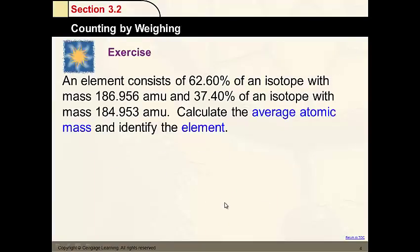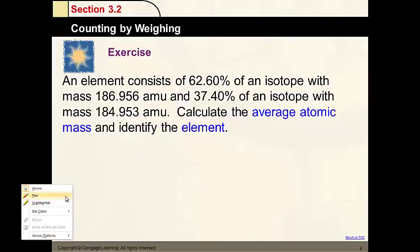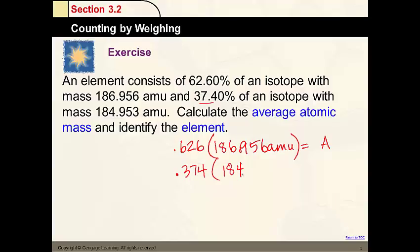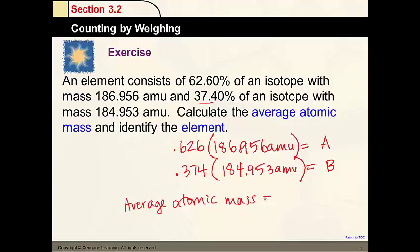Here's another example — you would set it up the same way. Take your percentages and convert those into decimals: 0.626 times its atomic mass gives you a value A. Then 0.374 for the second isotope with an atomic mass of 184.953 atomic mass units gives you value B. The average atomic mass equals A plus B, which would be 186.2. The element is rhenium if you want to check your work.